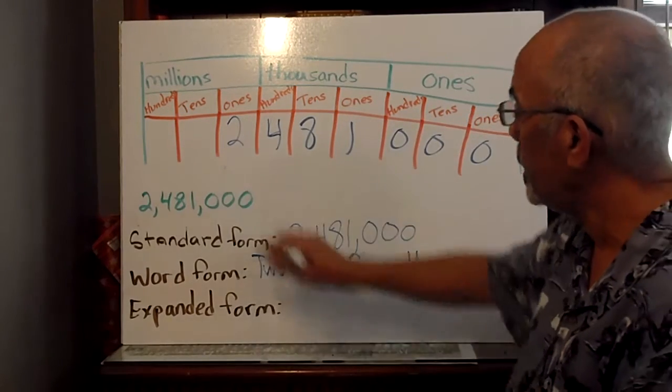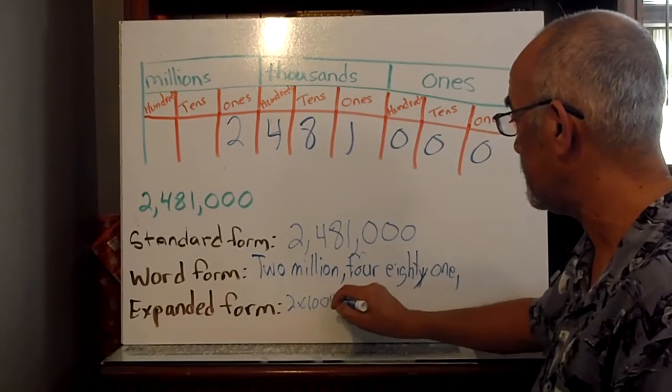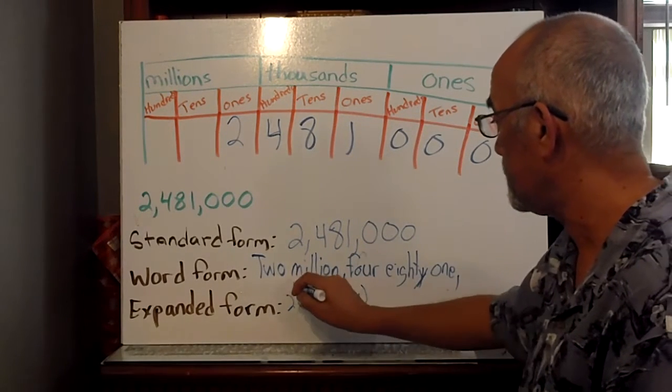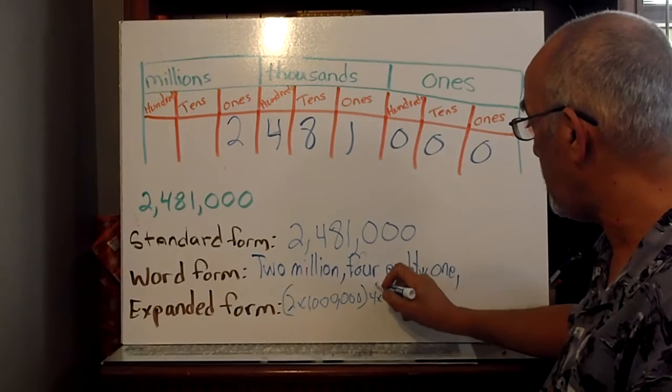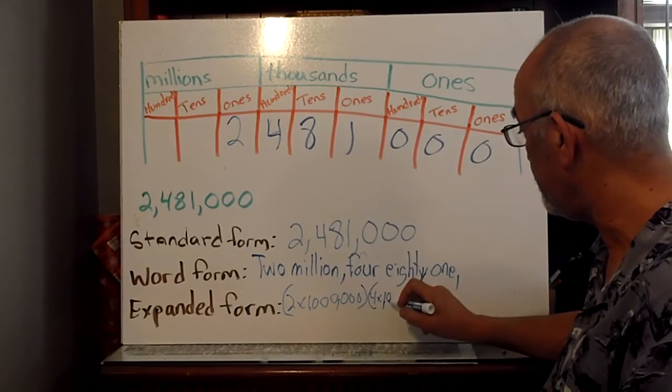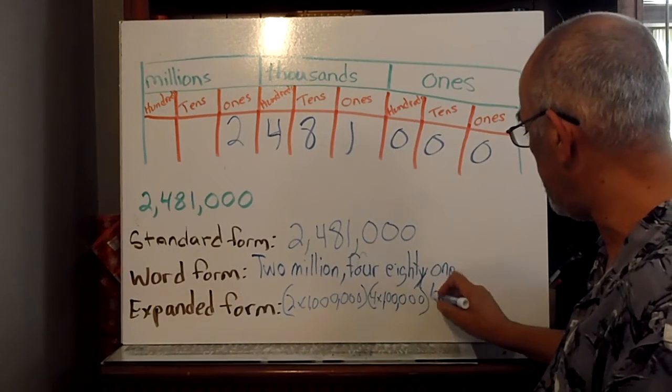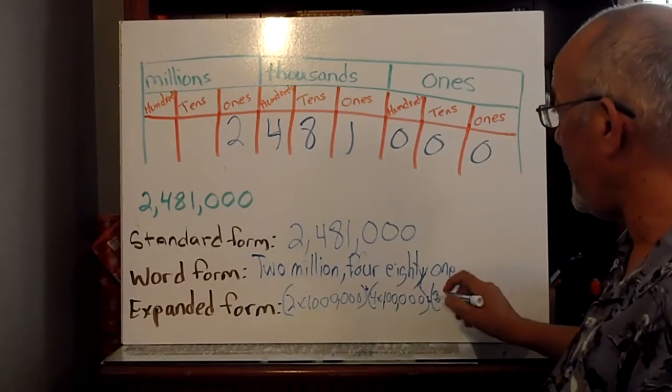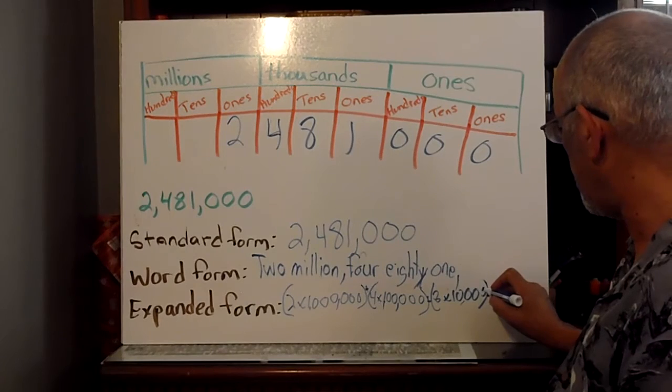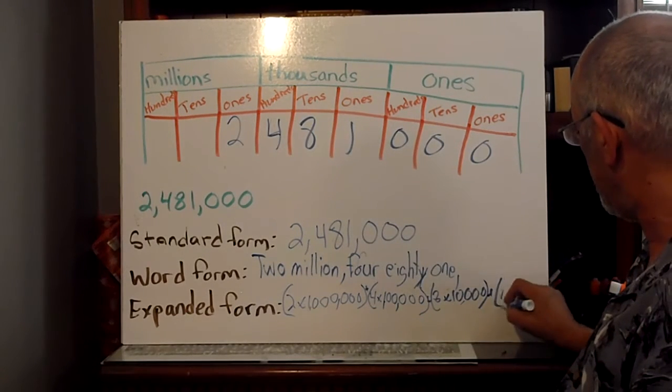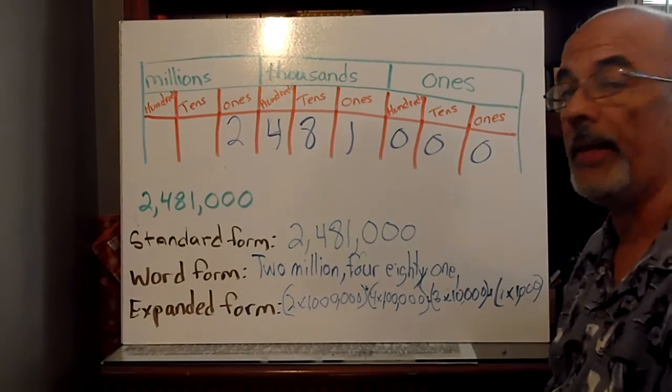And now, the last way we're going to do is an expanded form. So, we will have two times one million, and then we have four times one hundred thousand, plus eight times ten thousand, plus one times one thousand. So, that's our expanded form.